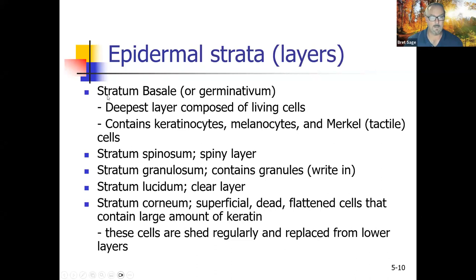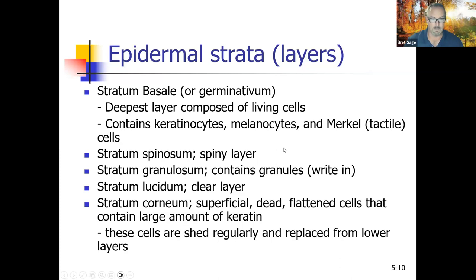Different layers of the epidermis: stratum basale or germinativum is the deepest layer, composed of living cells including keratinocytes (which produce keratin), melanocytes (which produce melanin, the color of our skin), and Merkel or tactile cells. Moving upward: stratum spinosum (looks spiny under microscope), stratum granulosum (contains stainable granules), stratum lucidum (a clear layer), and the outermost stratum corneum — superficial, dead, flattened cells with large amounts of keratin. This outermost layer protects us and is continuously shed and replaced from below.